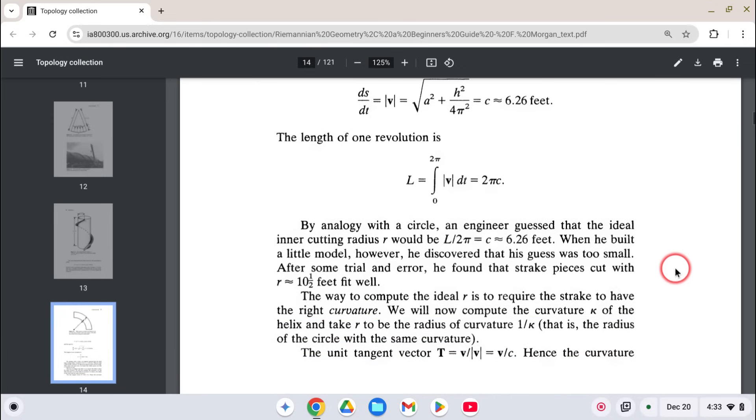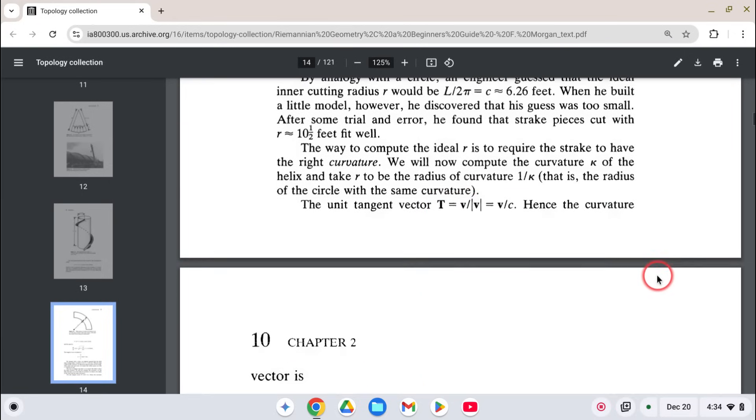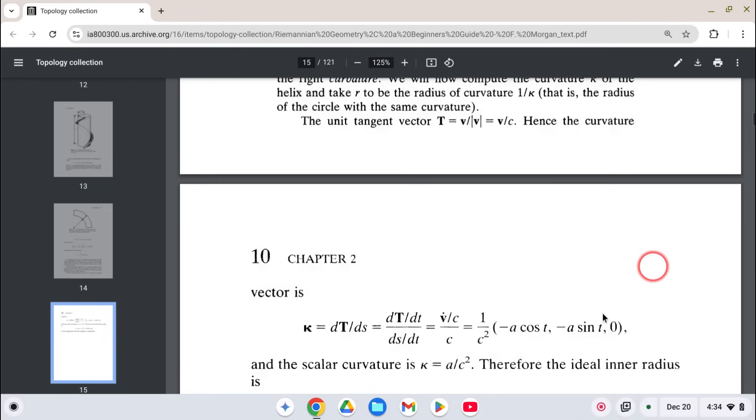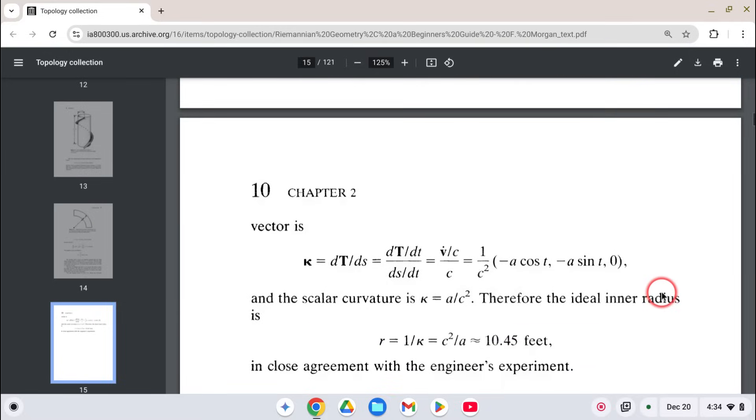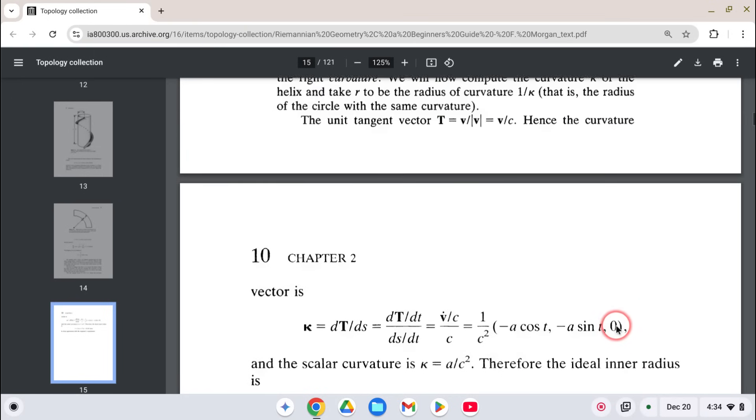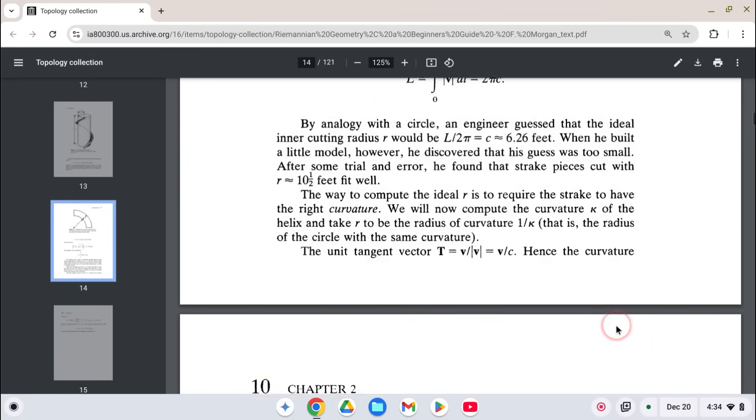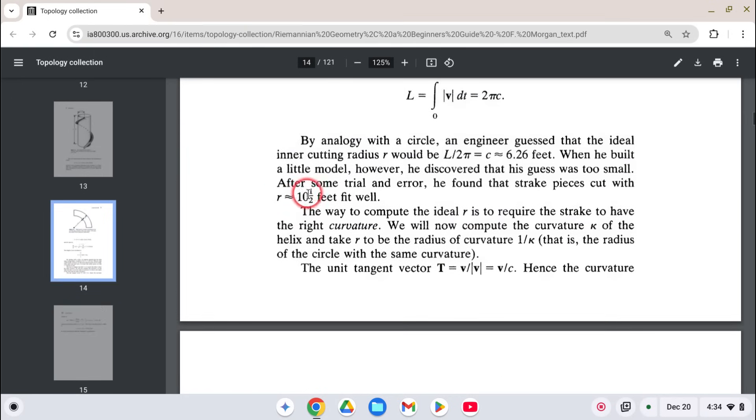The professor continues to go on. He uses the tangent vector method. I'm just learning about this, so I'm not going to explain it because I don't yet fully understand it. He does his calculation for curvature and he gets 10.45 feet. The engineer by experimentation got 10.5 feet.